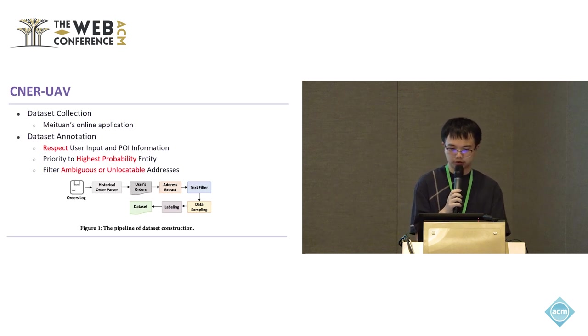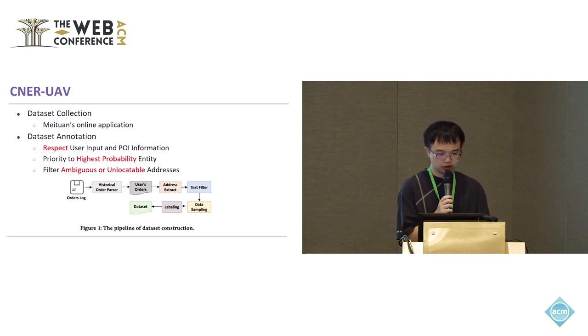We follow these guidelines in labeling the dataset. First, we respect the user input and POI information—that is, we annotate all entities when multiple references point to a single location. Next, we set priority to the highest probability entity. When multiple entities of the same category appear in the address text, we select the entity with the highest probability as the user destination. Third, we filter ambiguous and unlocatable addresses. That is, we exclude addresses with ambiguous descriptions or those that cannot be geolocated based on longitude and latitude.